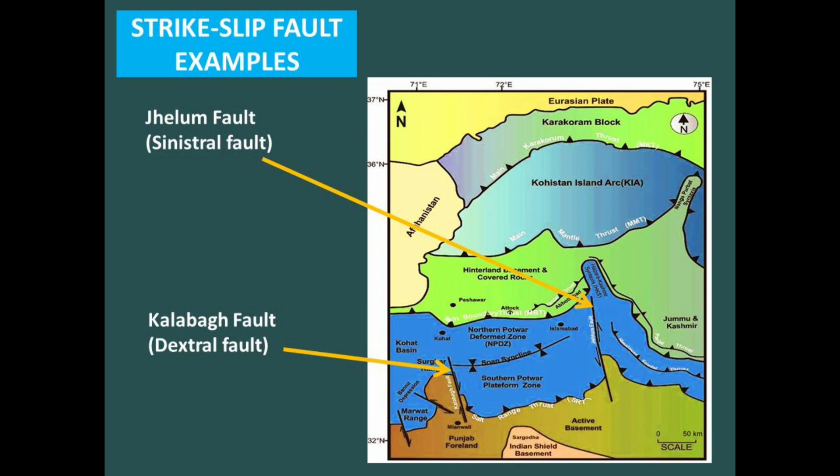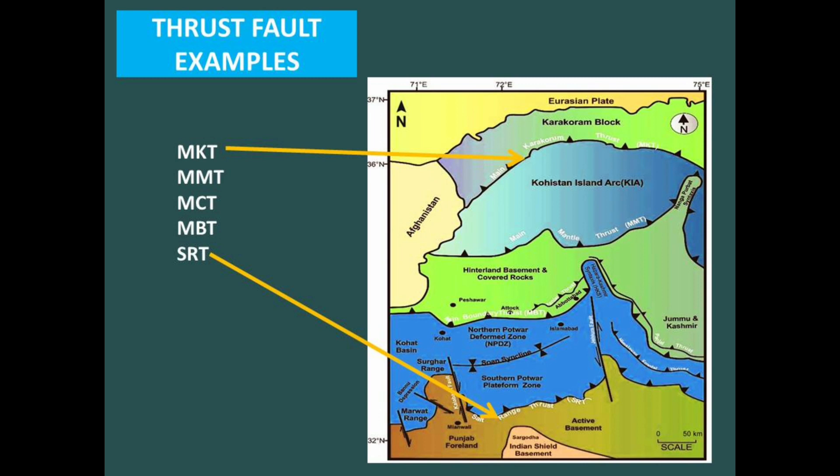Examples of thrust faults in Pakistan include the Salt Range Thrust, the Main Boundary Thrust (MBT), the Main Central Thrust (MCT), the Main Frontal Thrust, and the Main Karakoram Thrust (MKT). This concludes the brief introduction of faults, its parts, and its major types.